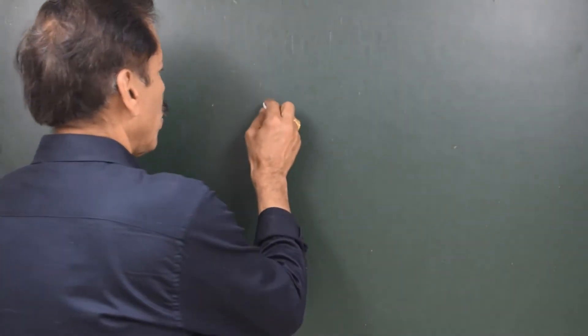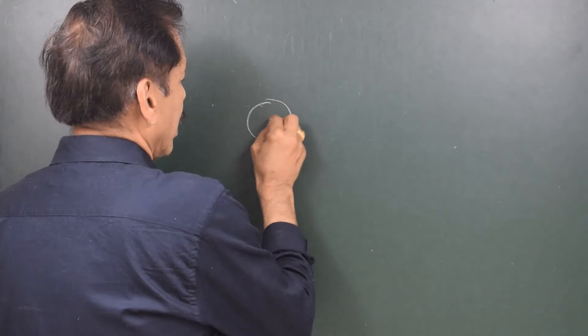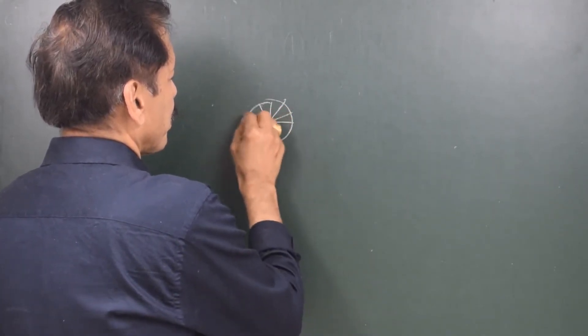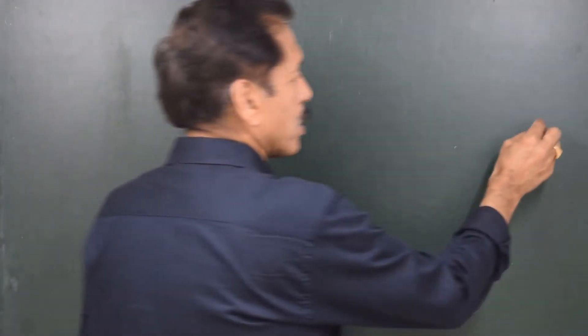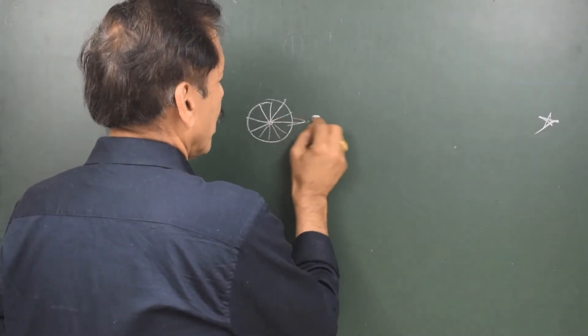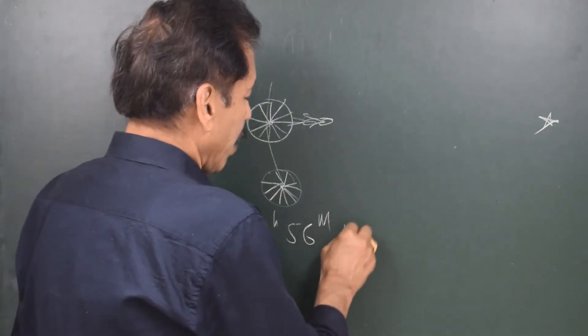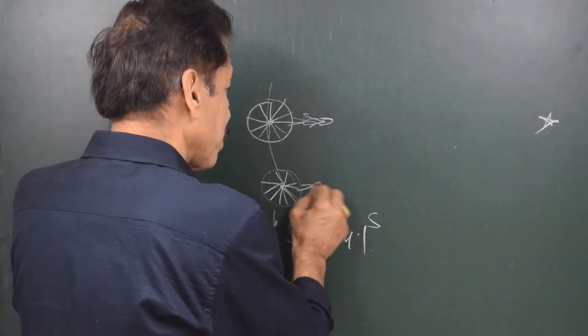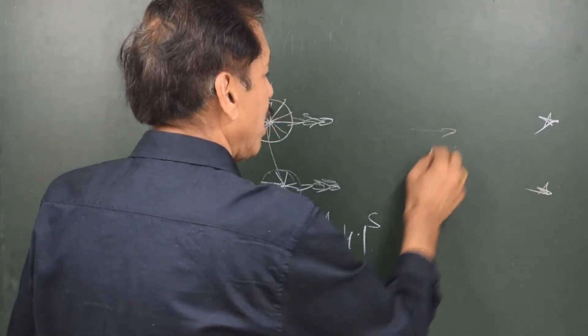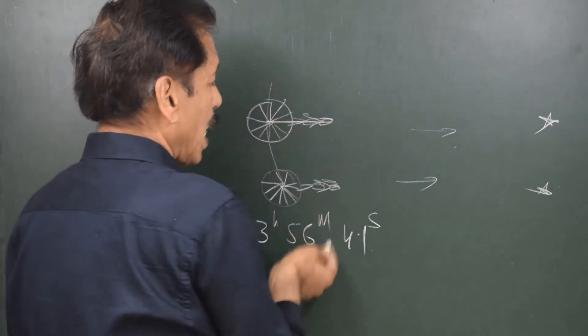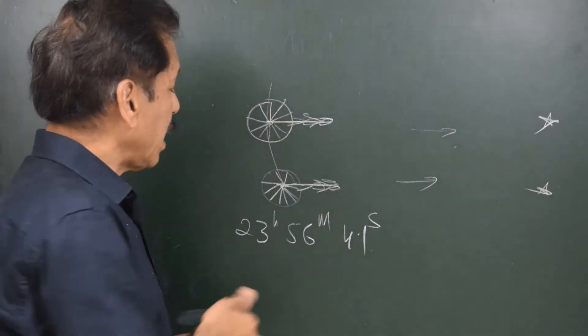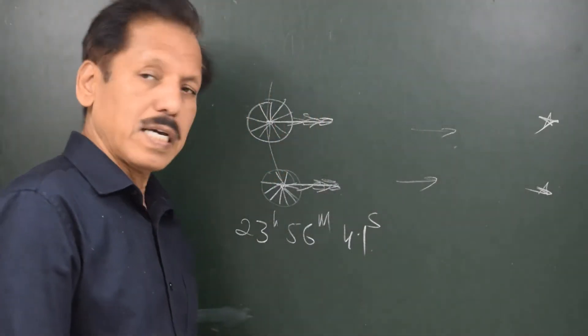Before we understand V-correction, let us understand the way the Earth spins on her axis. If we look at the Earth from the top, these are the meridians. There is a distant star and an observer standing here — the star is crossing the observer's meridian. After an interval of 23 hours 56 minutes and 4.1 seconds, the same person comes under the same distant star, and those two lines in space are parallel.